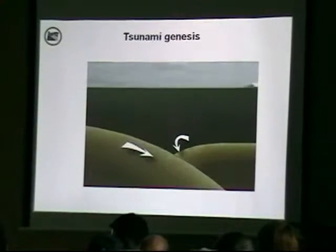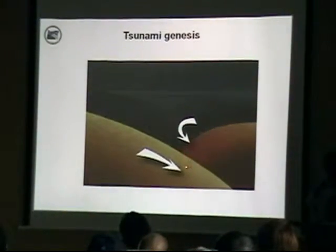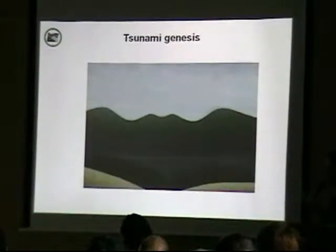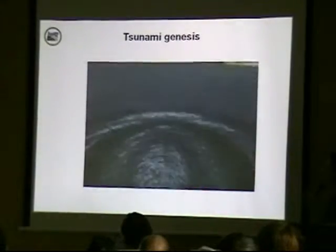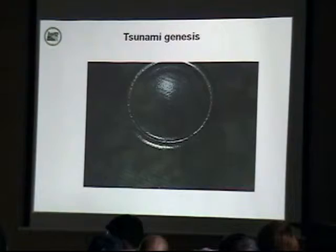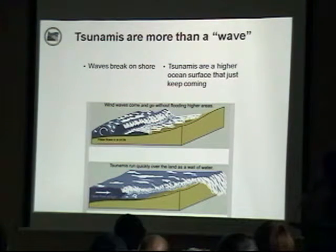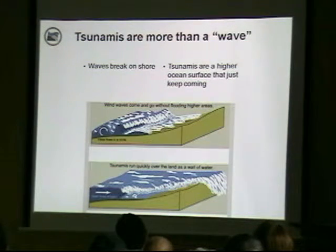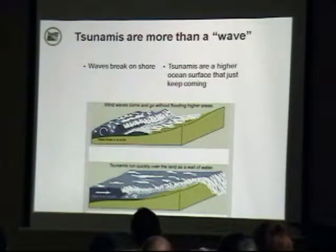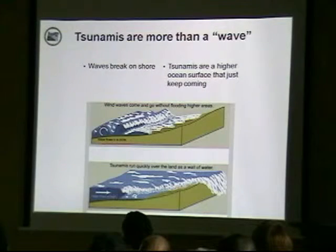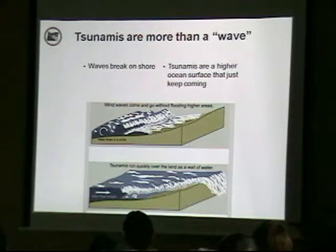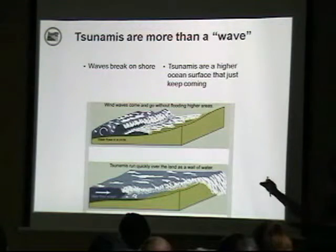An animation shows exactly that: the stuck zone bulges, releases, sends water straight up to the ocean's surface, then waves go in all directions. We say tsunami waves, though technically a true scientist might argue it should be called a surge. We'll keep calling it a tsunami wave — it's a surge of water that doesn't break on the shoreline but continues to go on and on.